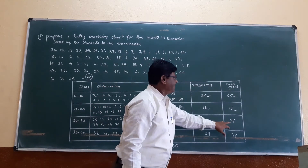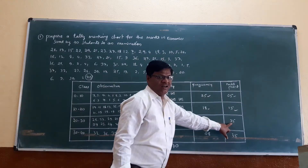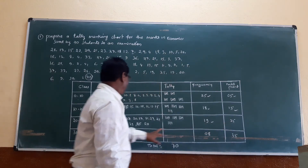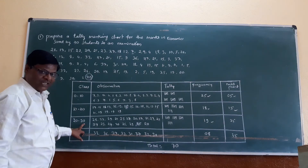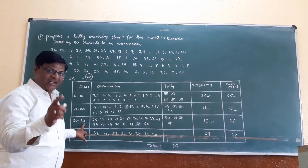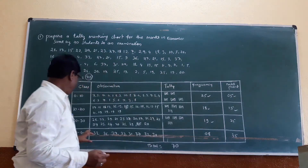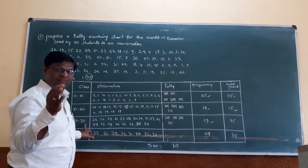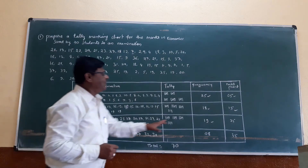The midpoint for class 20 to 30 is 25. It is calculated as 20 plus 30 equals 50, divided by 2 equals 25. Or 25 is half of 50.